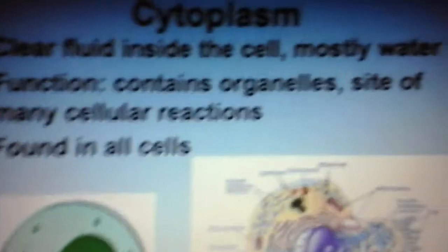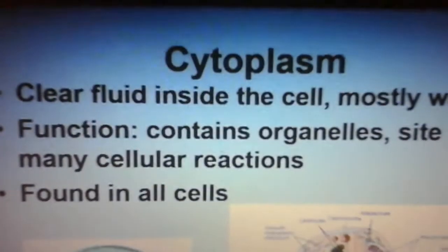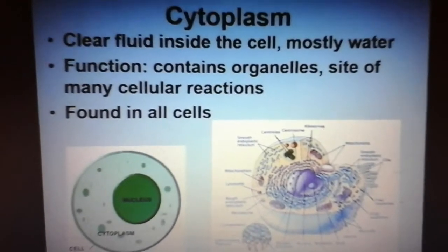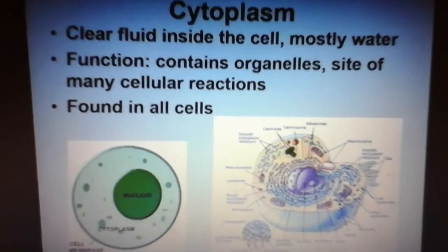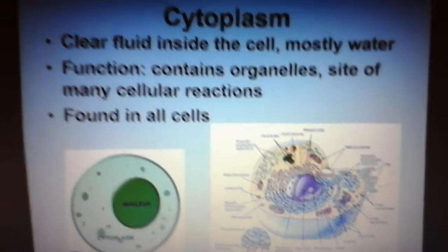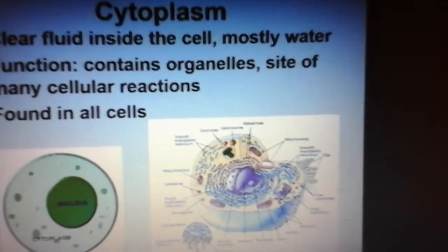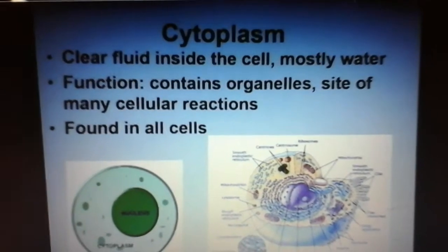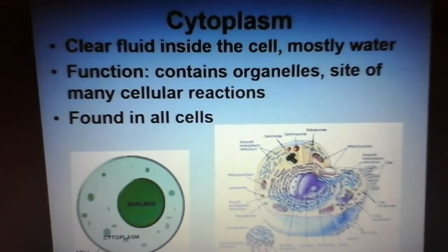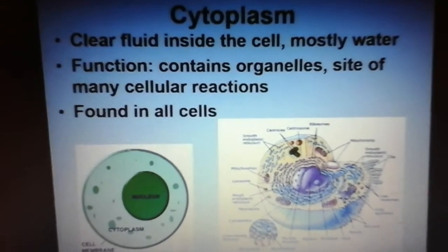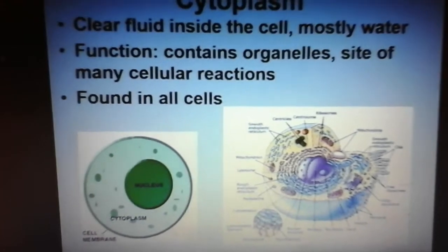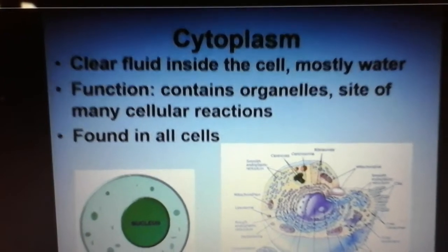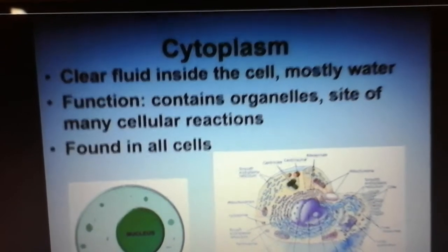Somewhere on your sheet you'll see what's called the cytoplasm. Any time you see the root word 'cyto,' it means cell, and 'plasm' is a goo. It says it's a clear fluid inside of the cell, but in reality it is a thick goo. Its function is basically to hold the parts of the cell in place — like a jello salad where the fruit is stuck inside. The cytoplasm is thick, so the organelles are just kind of stuck in place. It's found in all cells — prokaryotes and eukaryotes. Under its characteristic, it's a clear fluid inside the cell, mostly water but thicker.